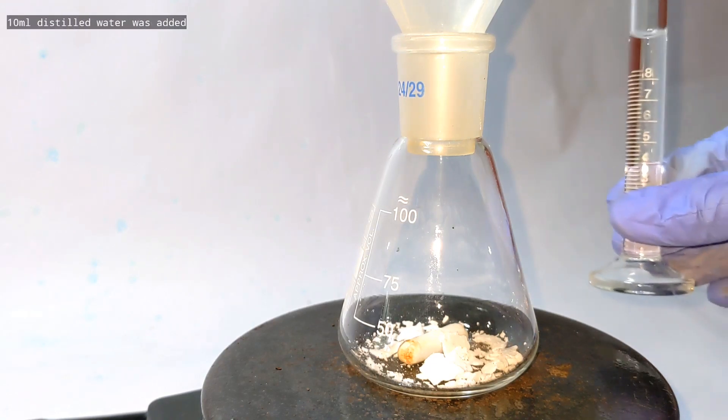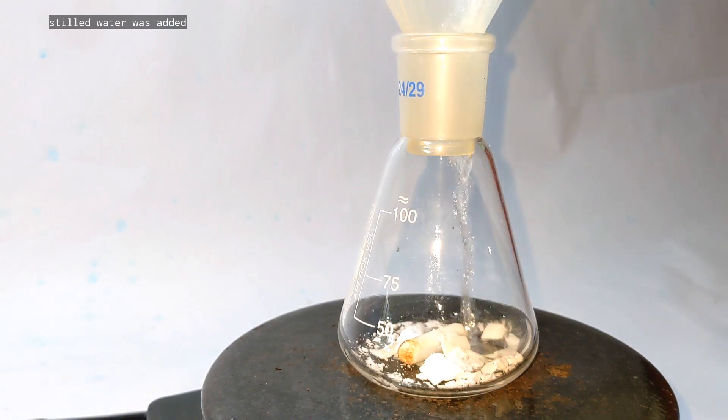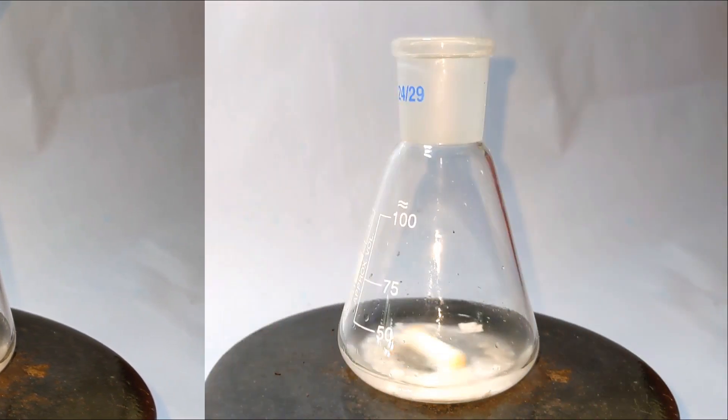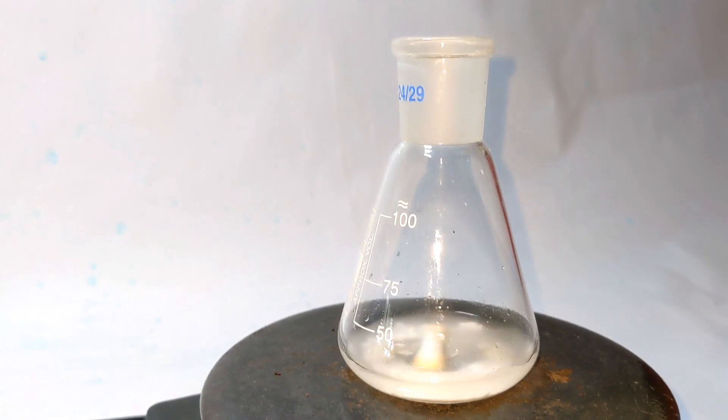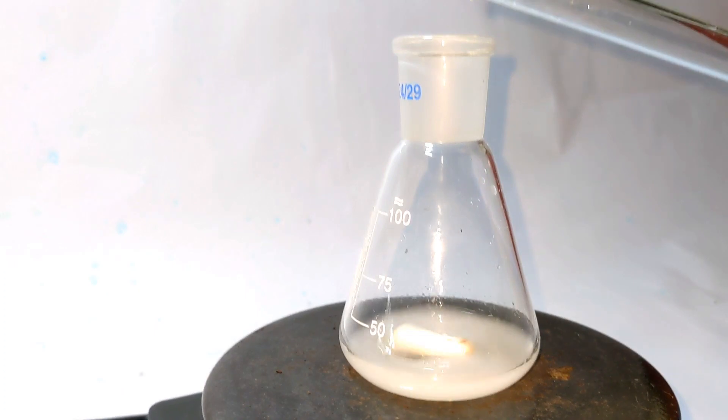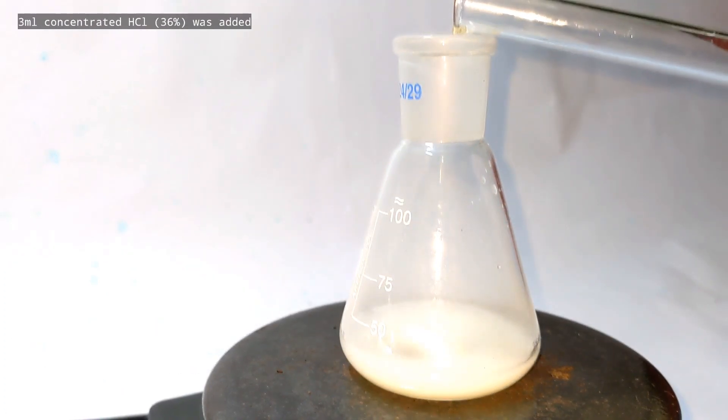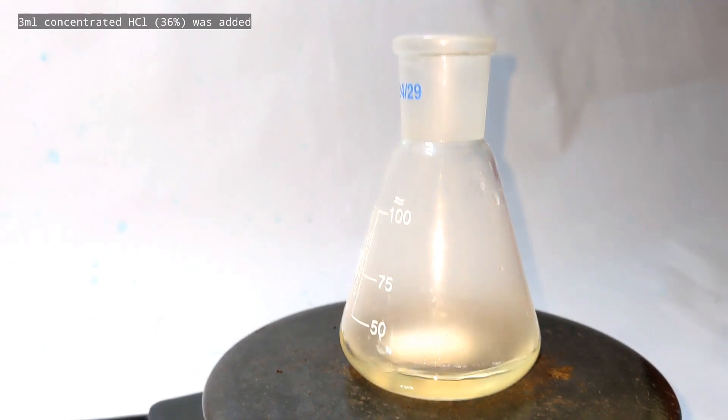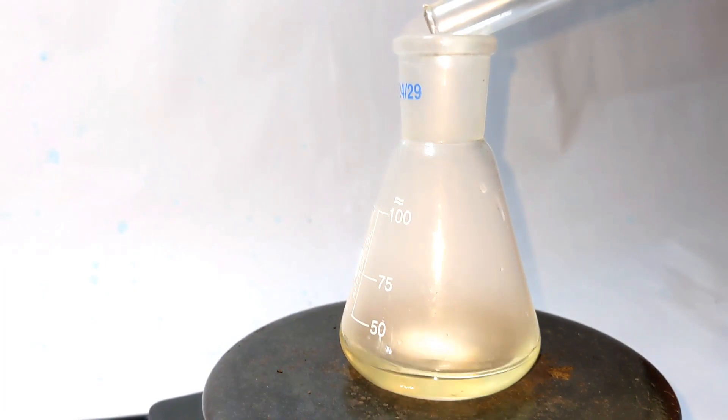10 milliliters of distilled water was added to dissolve the compound. Even with stirring, some cloudiness persists. Now add 3 milliliters of the 36% hydrochloric acid and immediately you will see everything getting cleared up.